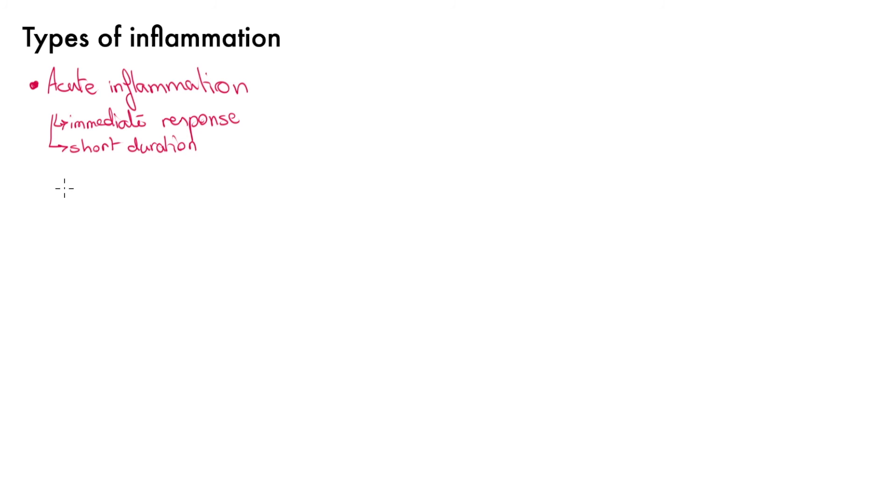The second one would be chronic inflammation, which happens if the acute inflammation doesn't achieve its goal of eliminating the offender and instead progresses into a long-lasting chronic inflammation.